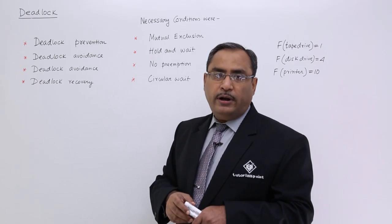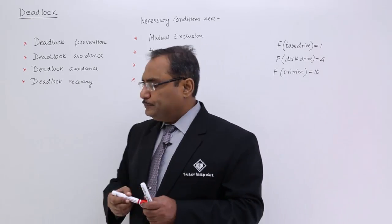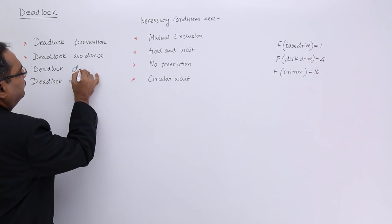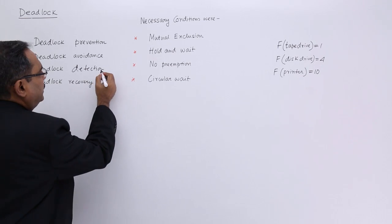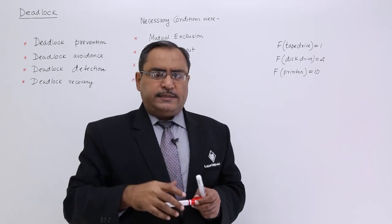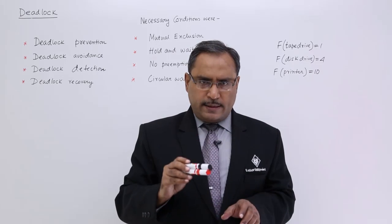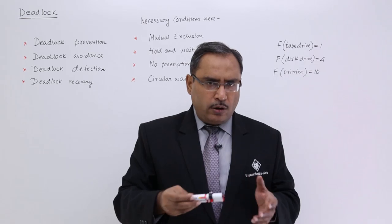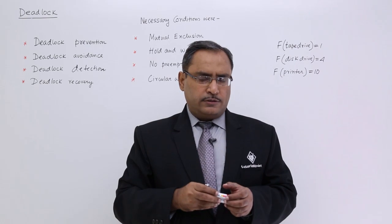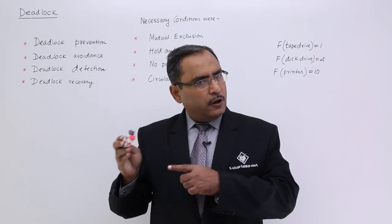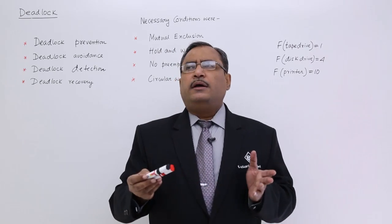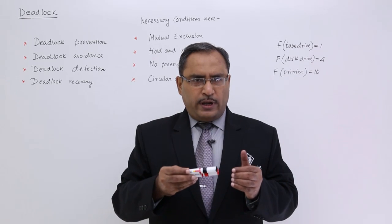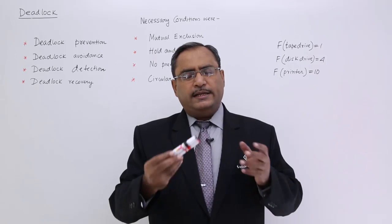That comes under deadlock avoidance. Next one is deadlock detection. What is deadlock detection? It means a system's progress has got postponed. Now what is the reason — is it due to deadlock or due to live lock? We are having two locks: deadlock and live lock. Live lock means a process has got suspended and is waiting for some favorable event to take place, and that is known as live lock.